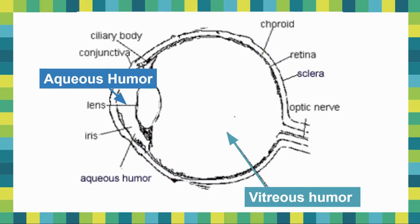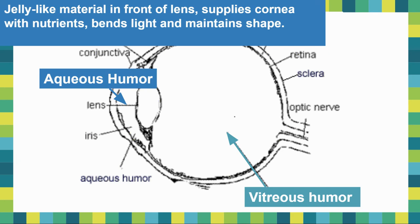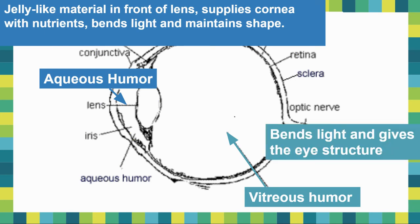The aqueous humor is the jelly-like material in front of your lens. It supplies the cornea with nutrients, bends light, and maintains the shape at the front of your eye — important for both nutrients and bending light. The vitreous humor on the inside is also a liquid gel; it bends light and gives the eye its structure. If you removed the vitreous humor, your eyeball would collapse because it creates the pressure that holds the structure.